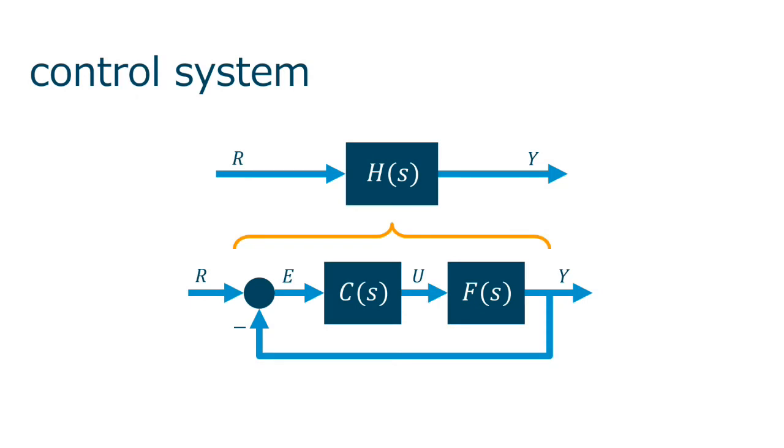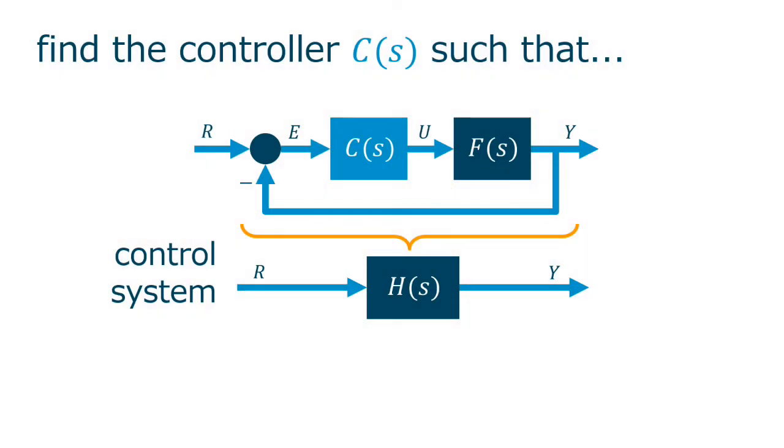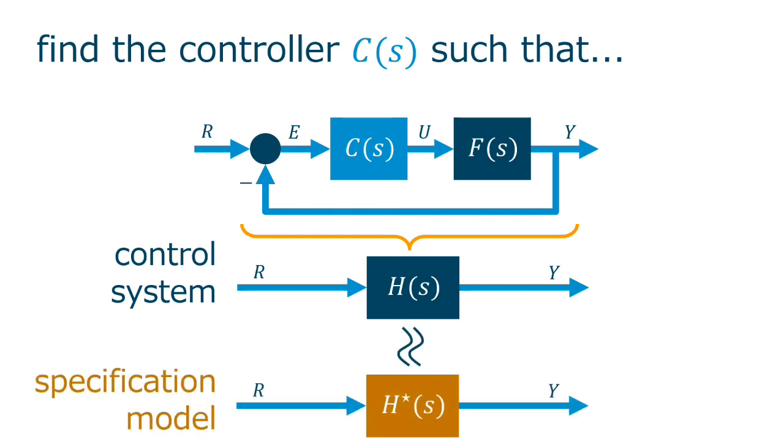So, we know that the control system H is given by the feedback of the controller and the plant. And, the controller is to be designed by us. So, what is coming next? Our objective, as the control problem, is to find the controller C(s), such that, when we close the loop with the controller and the plant, when we have the control system H, this control system is as close as possible to the specification model, this H star. And, this is all for today.